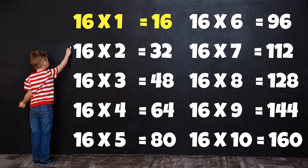Table of 16: 16×1=16, 16×2=32, 16×3=48, 16×4=64, 16×5=80, 16×6=96, 16×7=112, 16×8=128, 16×9=144, 16×10=160.